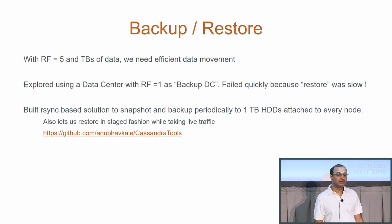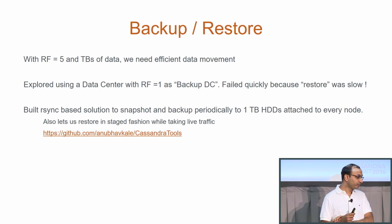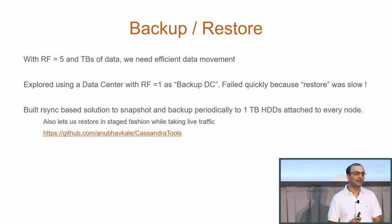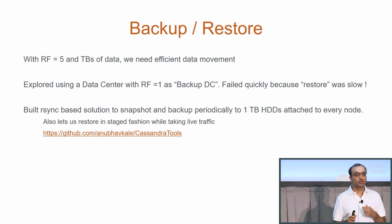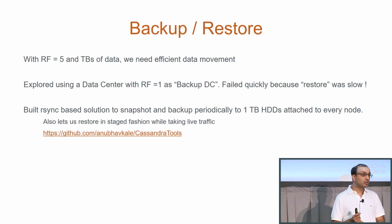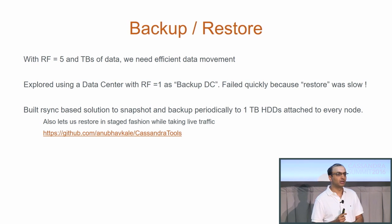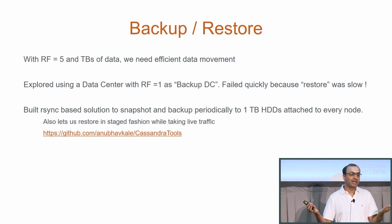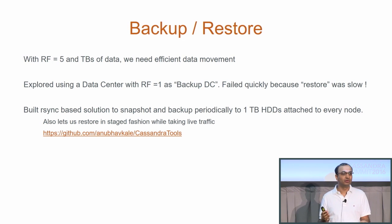Backup and restore is another interesting challenge. With a replication factor of five and terabytes of data, we need an efficient way to do backups and restore. We explored using a dedicated data center with replication factor one as a backup DC, but restore was painfully slow. So we built an rsync-based solution: on every node we attached one extra one-terabyte hard disk, which constantly takes snapshots and copies data over to that node. This also lets us restore in a staged fashion. We built a tool available on GitHub that lets you start all nodes taking live traffic while restoring in the background. We had to handle SS table naming since SS tables don't have GUIDs, to avoid overwriting old SS tables by mistake.